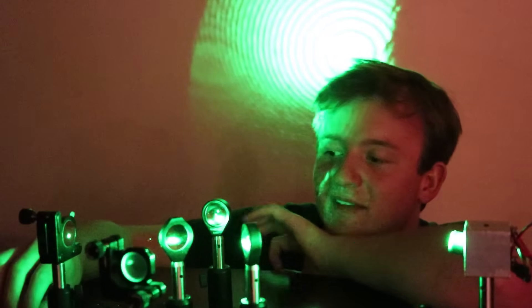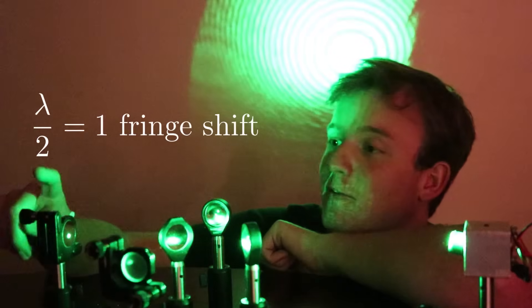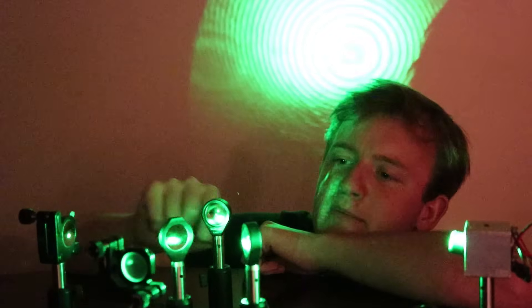Now due to this doubling of the distance, that means every time we moved the micrometer wheel by one half the wavelength, we would get a full bright to bright fringe shift. From our measurement, we know this big N here,